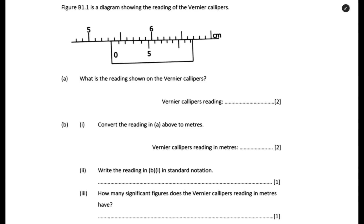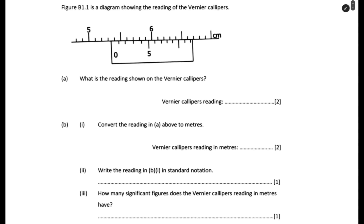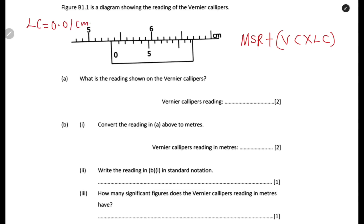Here is the question we are going to use. Figure B1.1 is a diagram showing the reading of the Vernier calipers. What is the reading shown on the Vernier calipers? To find the reading, you should know that the Vernier calipers is made up of two scales: the main scale and the Vernier scale. To find the readings, you add the reading from the main scale, then add the Vernier coincidence multiplied by the least count. The least count is the constant 0.01 centimeter. Readings on the Vernier calipers are given in centimeters.